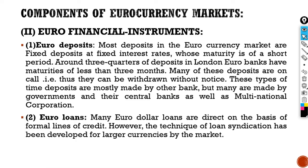Next we need to go through Euro financial instruments. The number one instrument is Euro deposits. Most deposits in Euro currency markets are fixed deposits at a fixed interest rate whose maturity is of a short period. Around three quarters of deposits in London Euro banks have a maturity of less than three months, so it is a very short-term period. Many of these deposits are on call — they can be withdrawn without notice. These types of time deposits are mostly made by other banks, but many are made by governments, central banks, and multinational corporations as well.